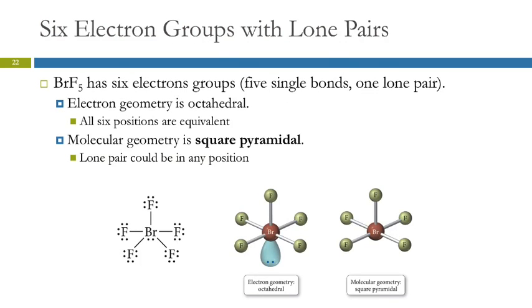Six electron groups with lone pairs. Bromine pentafluoride. There's going to be a lone pair on the bromine and five bonding pairs. Total of six makes this octahedron. That's the electron geometry is octahedral. Take off one. Because the bond angles are the same, it doesn't matter which one you take off. You just take off one to look at the molecular geometry, and we call this a square pyramid. The base of the pyramid is a square, and then we've got triangular sides coming up.